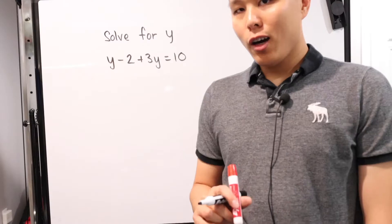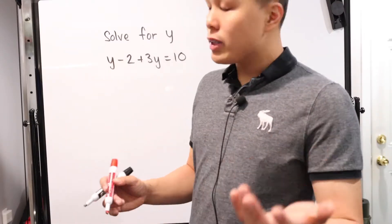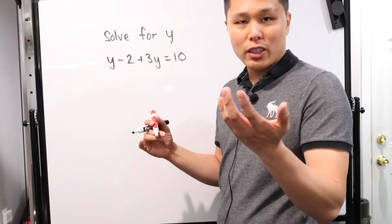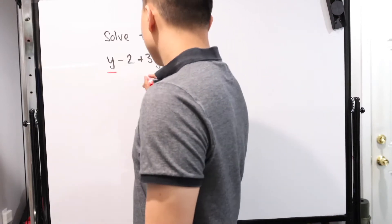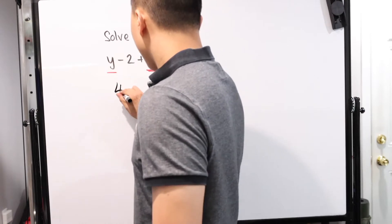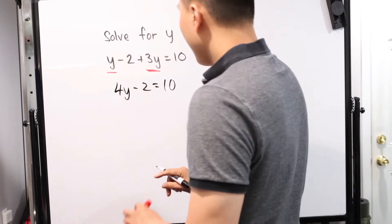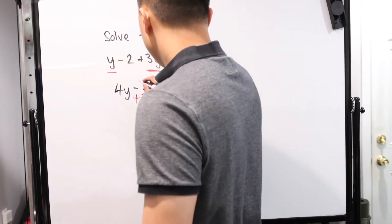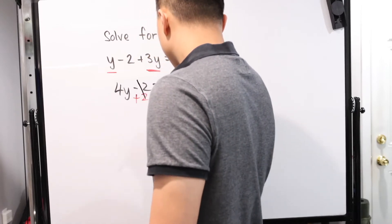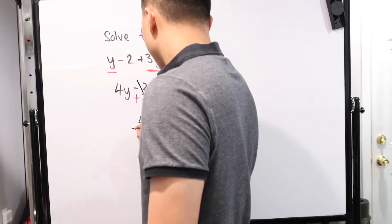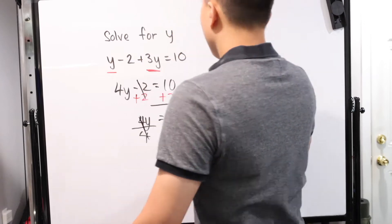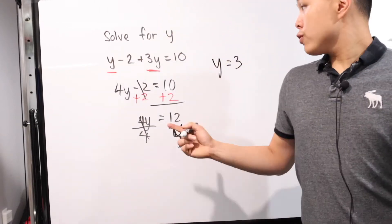Let's move on to problem two. Our second problem is actually very similar to the first one. The only difference is it's not a word problem — it gives you the equation right there and asks you to solve for the variable. So we combine like terms: we have the Y's, which gives us 4Y minus 2 equals 10. Then we add 2 to both sides to isolate Y. That goes away and we have 12 equals 4Y. Divide by 4 on both sides, and Y equals 3. Just like that, you've solved the problem.